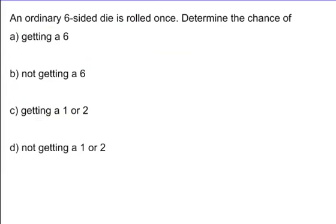This problem here is theoretical probability — we could actually roll a six-sided dice and see what we get. But here, we want to roll the dice one time and know the chance. What's the chance of getting a one? What's the chance of getting a six, not getting a six, getting a one or a two, or not getting a one or a two?